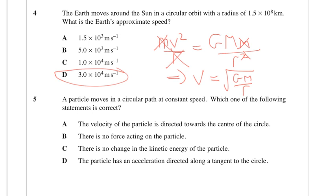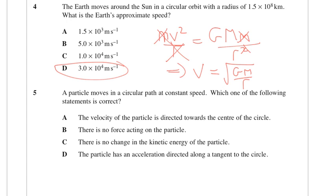Number 5, a particle moves in a circular path at constant speed. Which of the following statements is correct? The velocity of the particle is directed towards the center of the circle - rubbish, it's tangential. There is no force acting on the particle - rubbish, otherwise it wouldn't be moving in a circle. There is no change in kinetic energy, that is true, because its speed stays the same. It's option C.